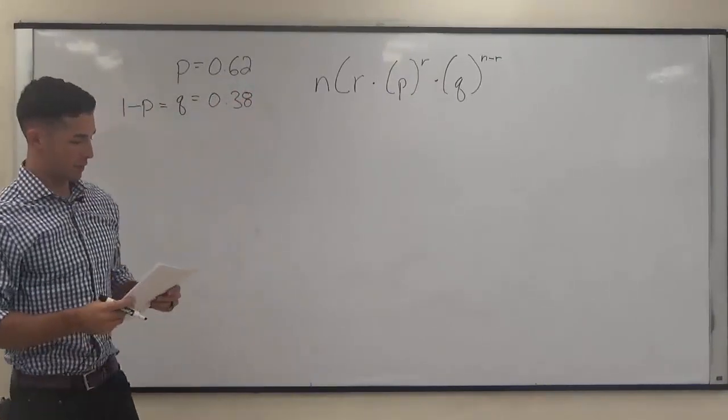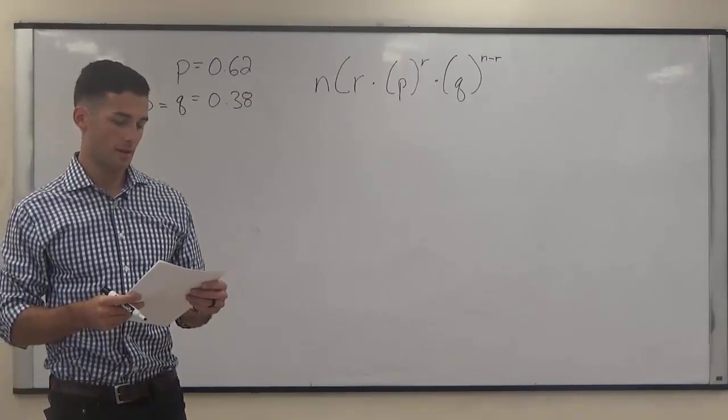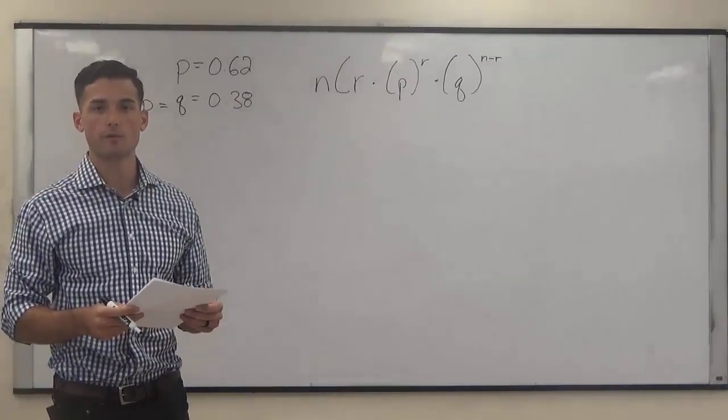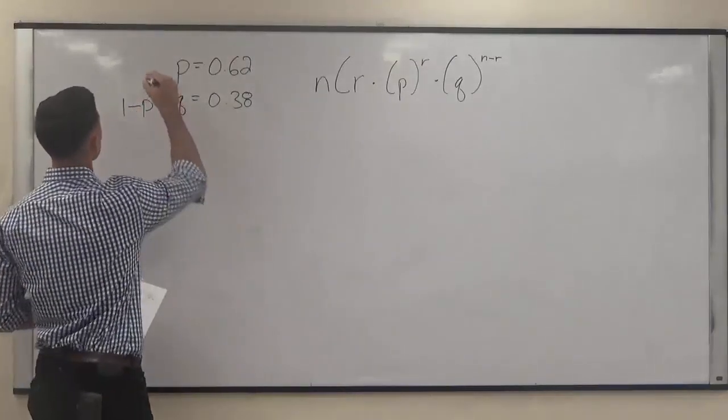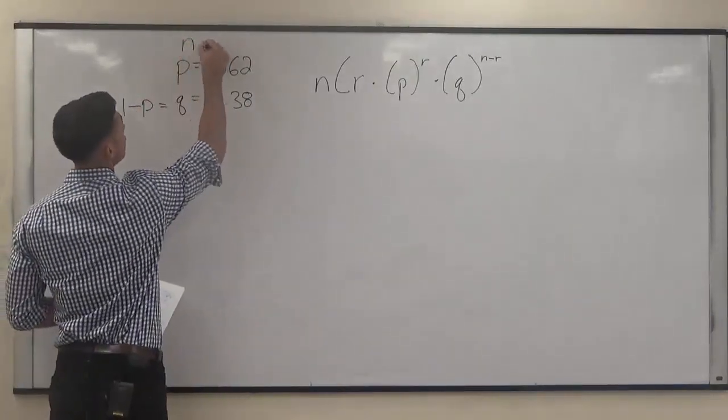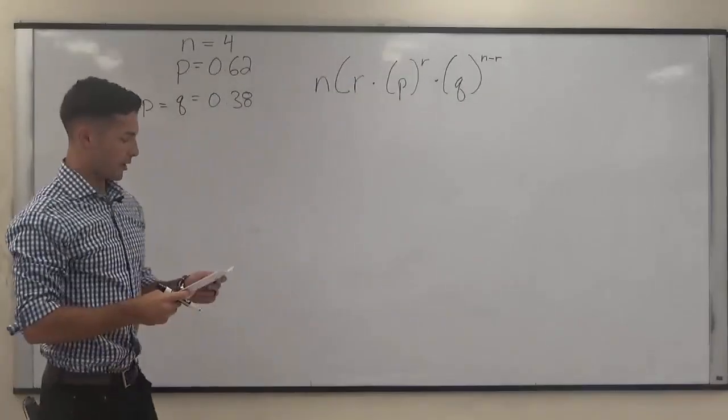In this problem, we're told that four women are surveyed, and we want to find the probability that exactly one of them believes in the link. So N, the number of people surveyed, is going to be 4. For part A,